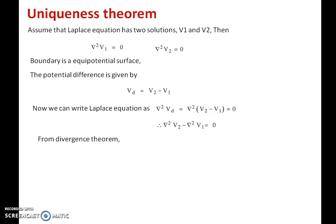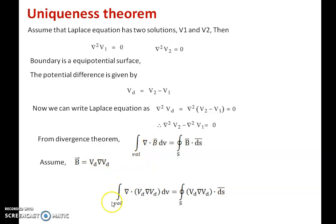Now I will apply the divergence theorem. Using the divergence theorem we can write a volume integral in terms of a surface integral: volume integral of (del dot B) dv = surface integral of B dot ds. Now I will do a modification and write the vector B as vd times del(vd), where vd is a scalar and del(vd) is a vector, so their product is a vector. Substituting this: volume integral of del dot (vd * del(vd)) dv = surface integral of vd * del(vd) dot ds.